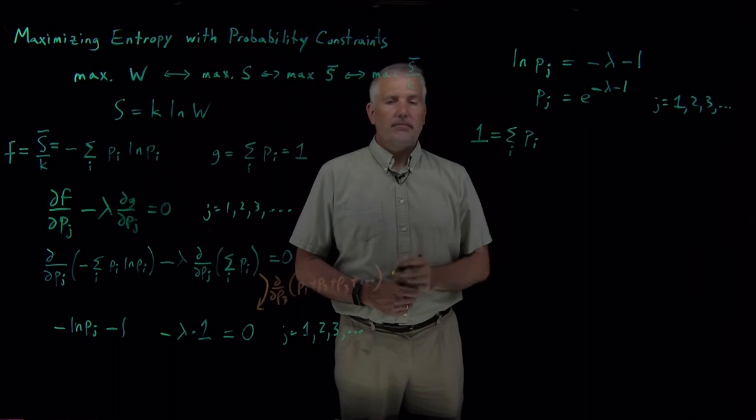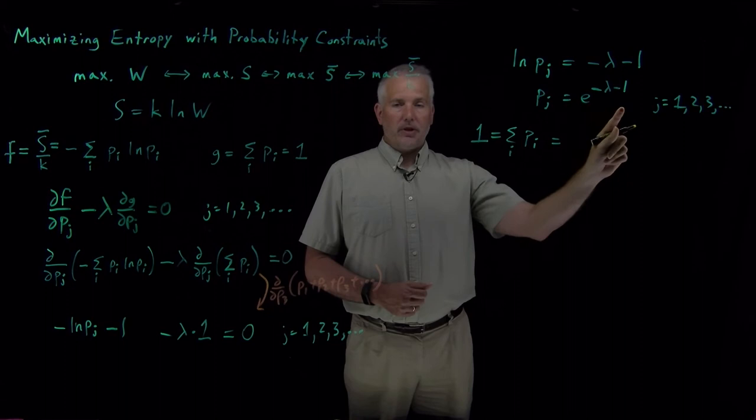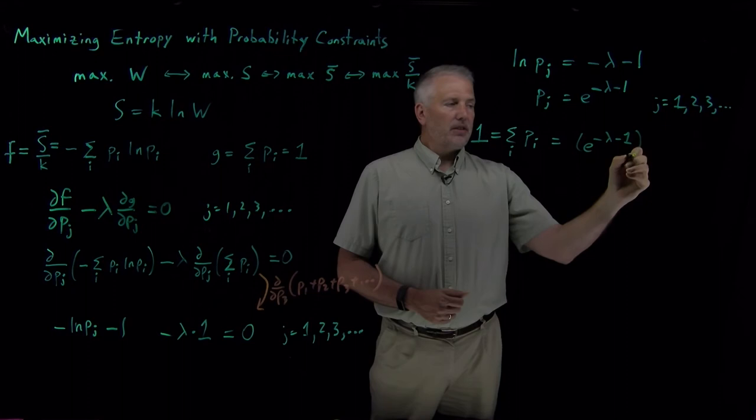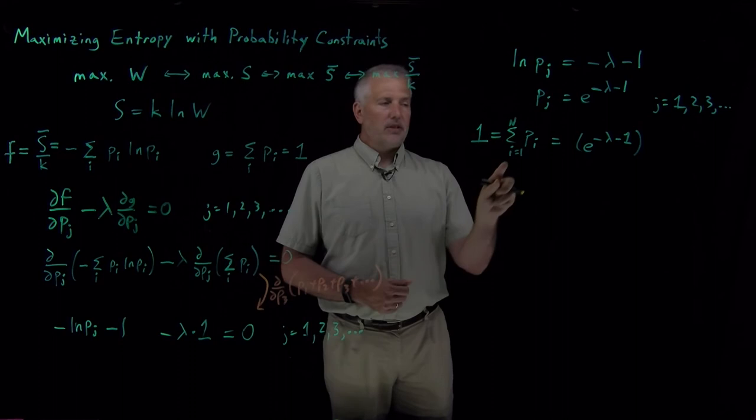So adding up this value for P1, this value for P2, this value for P3, I'm going to get e to the minus lambda minus 1 for each of these terms. If I have, let's say, big N different possibilities, state number 1, 2, 3, all the way up to state N.